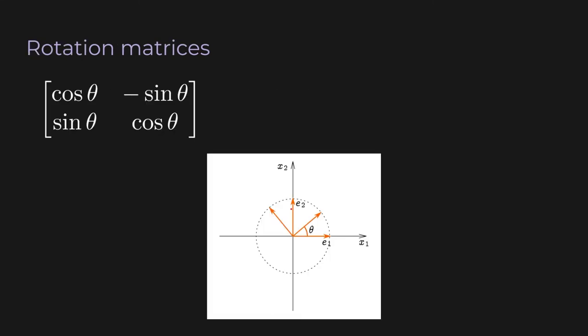Orthogonal matrices show up everywhere, but especially in physics. In particular, rotation matrices are a special type of orthogonal matrix. You can have rotation matrices in any number of dimensions, but to keep it simple, let's look at two dimensions. Imagine you have some specific angle theta — you can create this 2×2 matrix. If you multiply this matrix by a vector, the output vector will have the same length as the input vector but rotated by theta. In this graph, e₁ and e₂ are basis vectors and are our input vectors. We multiply each by the rotation matrix to rotate them by theta — e₁ goes to e₁' and e₂ goes to e₂'. The angle between e₁ and e₂ is 90 degrees, and the angle between e₁' and e₂' is also 90 degrees, so angles and lengths are preserved.